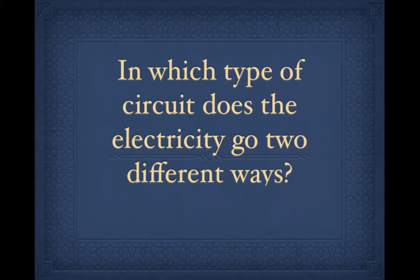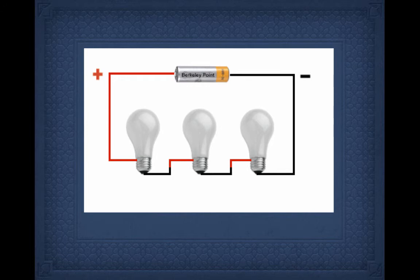Which type of circuit does electricity go two or more different ways? Here again, parallel circuit. Big circle, series circuit.